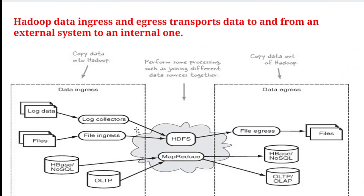Let us see a few examples of how data ingress and egress transport data to and from external systems. In between we have HDFS and MapReduce. The data ingress side includes log data, normal files, data from HBase, NoSQL databases, and OLTP databases. Log collectors and file ingress mechanisms send a copy of all this data into HDFS and MapReduce.